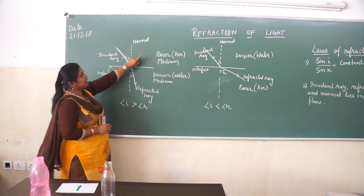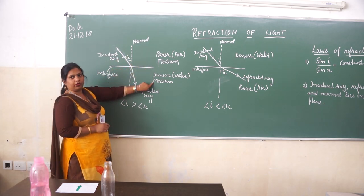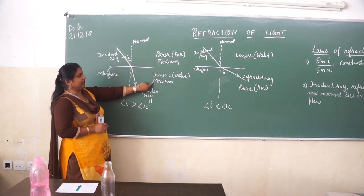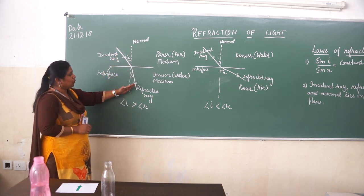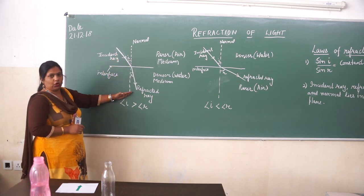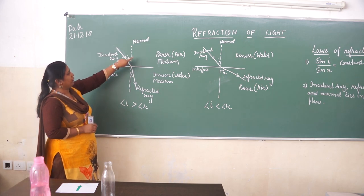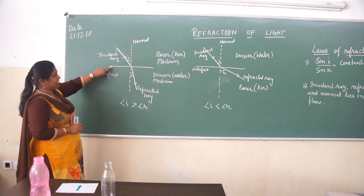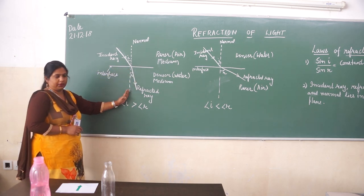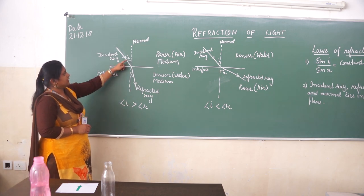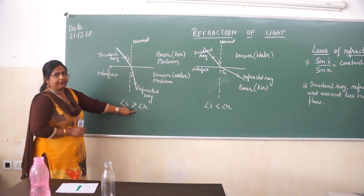For example, if light is moving from a random medium, say air, to a more dense medium, say water, then it will bend towards the normal. The normal is the perpendicular to the air and water interface. In that case, the angle of incidence is greater than the angle of refraction.